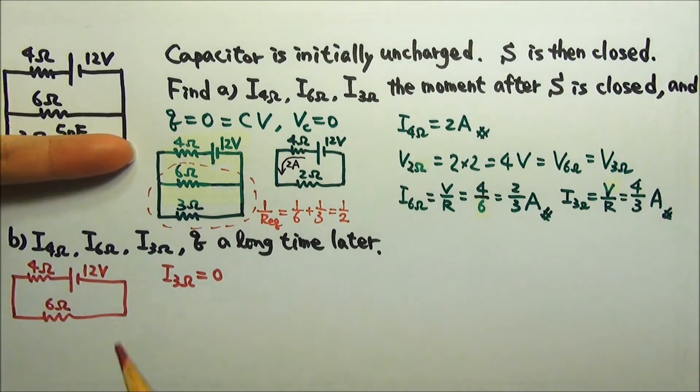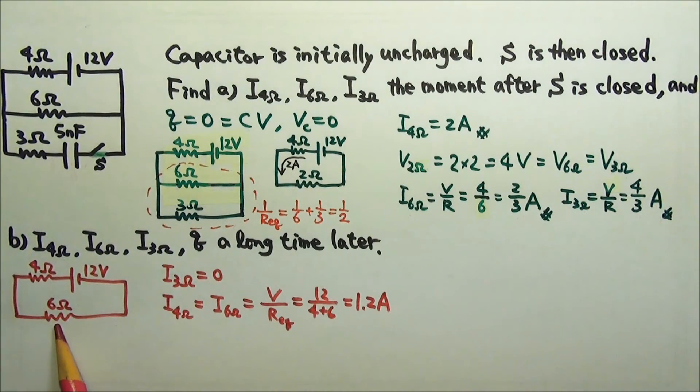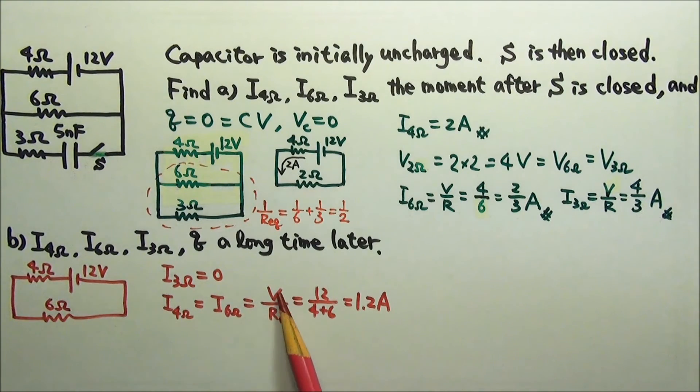And with this segment removed, the circuit is just like this one. So these two are in series, they get the same current, which is V over R, 1.2 amps.